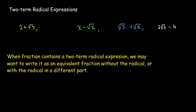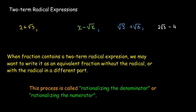Now, depending upon the problem we're trying to solve — and a lot of these problems we will not see until we get to calculus — we can take these fractions that have the two-term radical expression and rewrite them as an equivalent fraction where either there is no radical, or you have a radical that used to be in the denominator and is now in the numerator, or vice versa. This process is called rationalizing, because an expression that has a radical in it is irrational, and an expression with no radical would be rational. That's why it's called rationalizing the denominator or rationalizing the numerator.